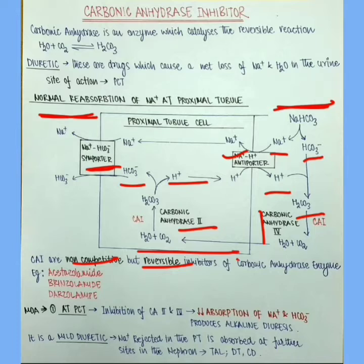Acetazolamide is mainly used orally but drinzolamide and darzolamide are used topically as eye drops. Now the mechanism of action of CAI. Their action at proximal convoluted tubule is mainly responsible for diuretic action.